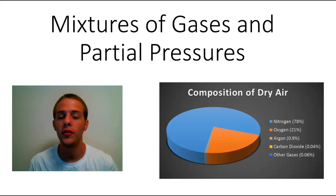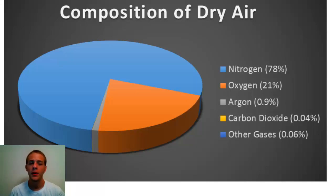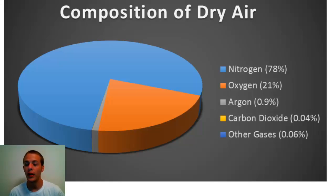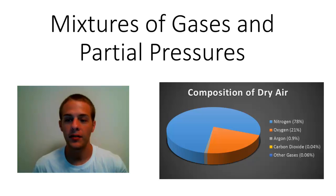If we look at this pie chart that breaks down the composition of dry air — assuming the air is dry with no water molecules, which where I live in Florida is pretty unlikely since it's very humid — the air is made up of the following components: nitrogen gas is by far the largest at 78%, oxygen is second at 21%, there's almost 1% argon, about 0.04% carbon dioxide, and the remaining 0.06% is a mixture of other gases present in very small amounts.